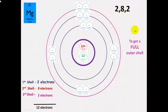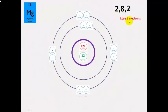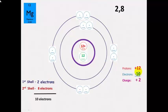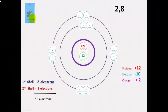To get a full outer shell, magnesium is going to want to lose 2 electrons. It loses those 2 electrons, giving it a total of 10 electrons. It still has 12 protons because that number doesn't change, giving it an overall charge of plus 2. So it changes from the magnesium atom into the magnesium ion, Mg²⁺.